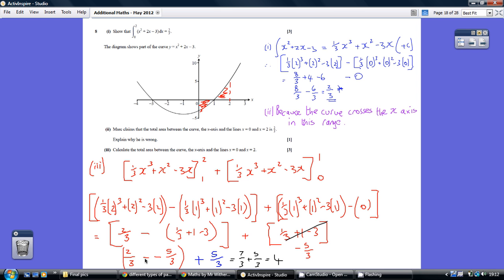Be careful - this is subtracting a negative, so we're actually adding. So 2/3 - (-5/3) = 7/3. That is the area of this section.